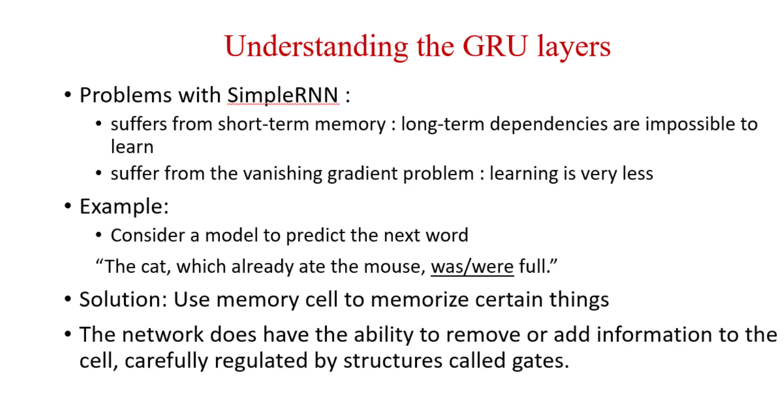The network does have the ability to remove the information or add the information in such a memory block with the help of carefully regulated structures called as gates. So we know that job of gate is to allow someone else into the building or deny the entry into the building. Same case is here in the neural network.